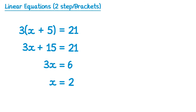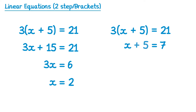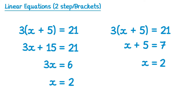Now I'm going to solve the exact same equation again but using a different approach — you can choose whichever one you prefer. When we have a number in front of a bracket, like this 3, it means 3 is multiplied by the whole bracket. So we use the inverse operation and divide by 3 on both sides. On the left hand side this cancels the 3, leaving us with x plus 5, and on the right hand side 21 divided by 3 is 7. Now we just subtract 5 from both sides: on the left the 5s cancel giving x, and on the right 7 take away 5 is 2. We still get the same solution, but it's slightly quicker.